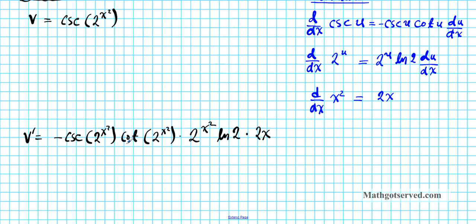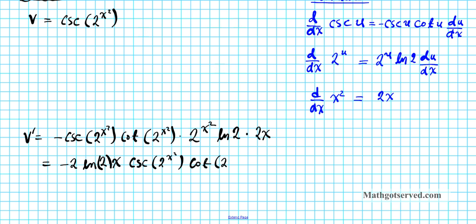Writing v' cleanly: collecting the constants gives negative 2 ln 2 times x, then the trig functions cosecant of 2 raised to the x squared, cotangent of 2 raised to the x squared, times 2 raised to the x squared.